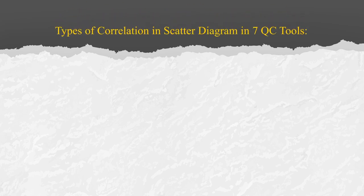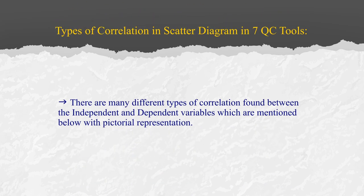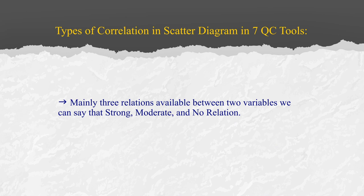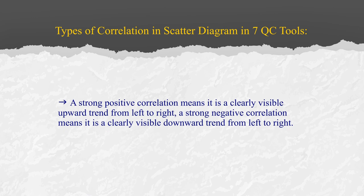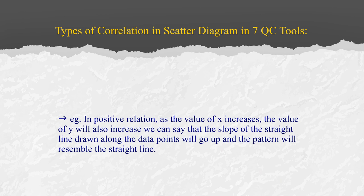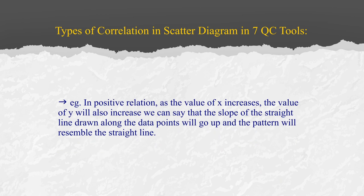There are types of correlation in the scatter diagram. There are many different types of correlation found between the independent and dependent variables. Mainly three relations are available between two variables: strong, moderate, and no relation. A strong positive correlation is clearly visible as an upward trend from left to right. A strong negative correlation is clearly visible as a downward trend from left to right. In a positive relation, as the value of X increases, the value of Y also increases, and the slope of the straight line along the data points will go up.